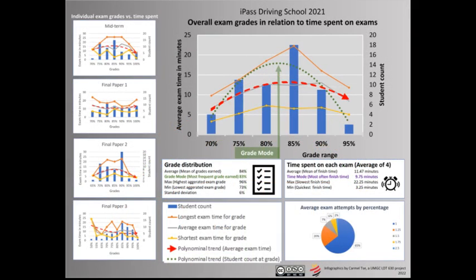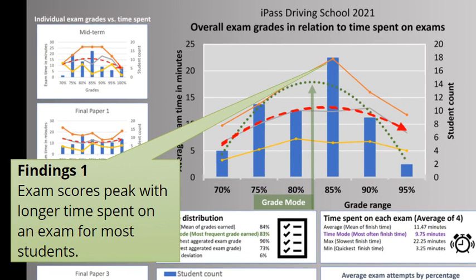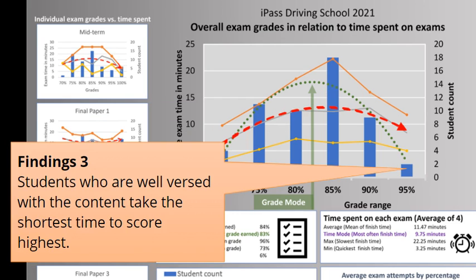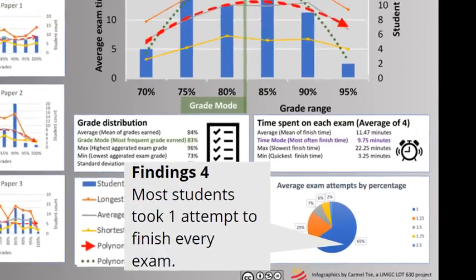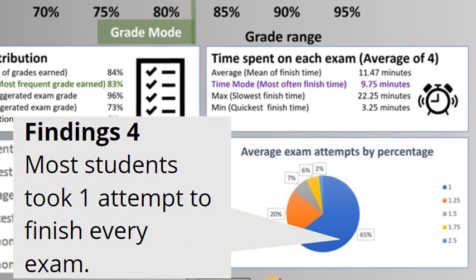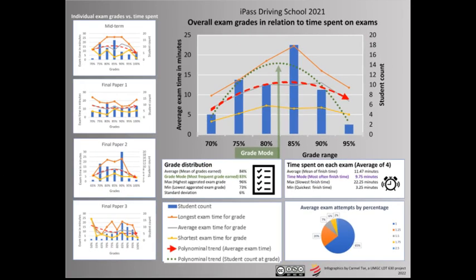There are also several significant findings. Exam scores peak with more extended time spent on an exam for most students. The score histogram indicates a normal distribution of the cohort scores, with a standard deviation of 6%, aligning well with Six Sigma rules to measure an education institution's performance. Students who are well-versed with the content take the shortest time to score highest. Even though we allow students multiple attempts to write the exams, mostly all four papers were completed in single attempts. However, the provision is still helpful for students with language or computer barriers. We can conclude that sufficient time for assessments will produce more knowledgeable drivers, aligning well with our safety-first philosophy.